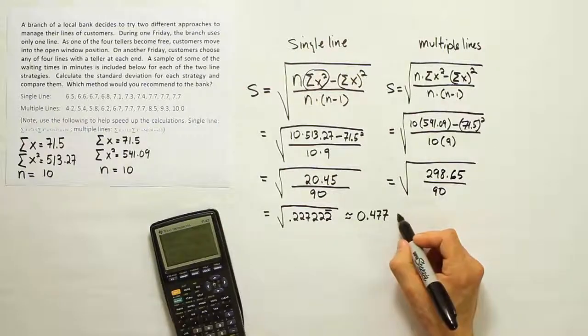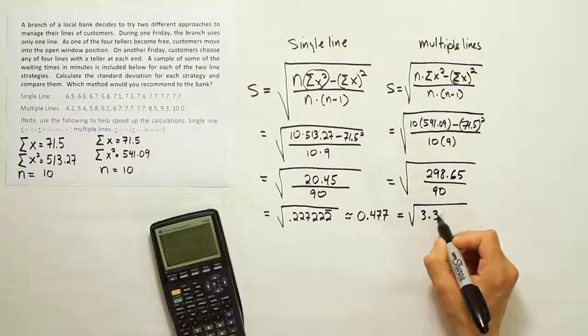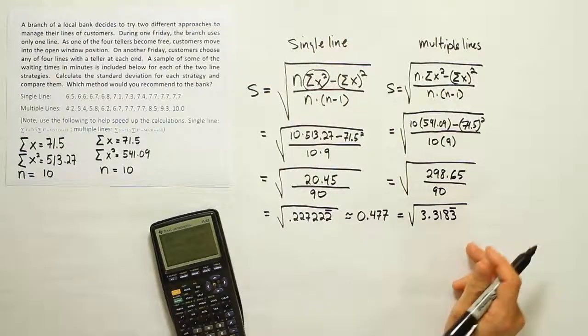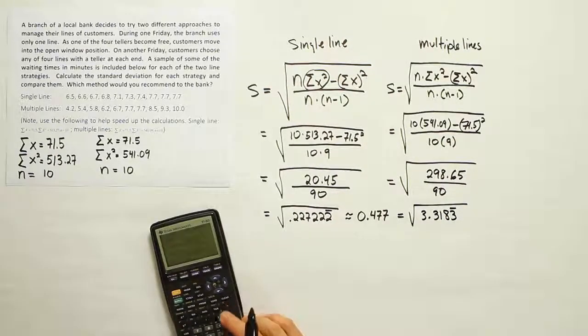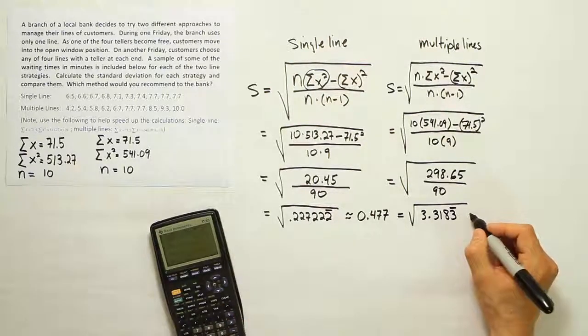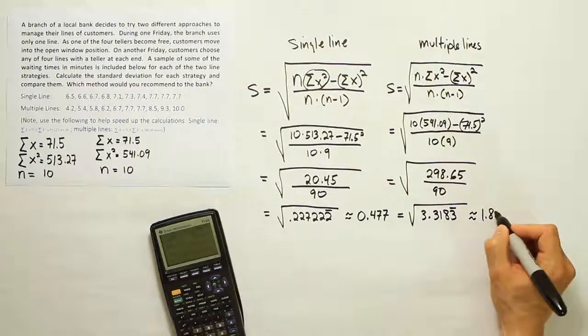And we end up with the square root of 3.3183 repeating. Again, I'm not going to round it. I'm just going to take the square root at that point. When I do that, I end up with the answer approximately 1.822.